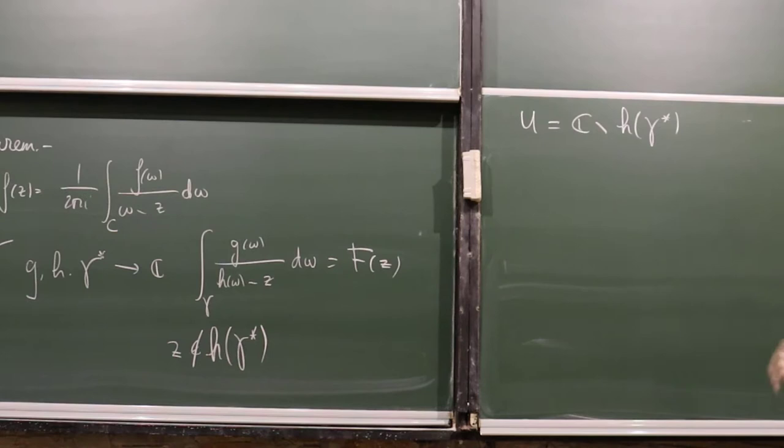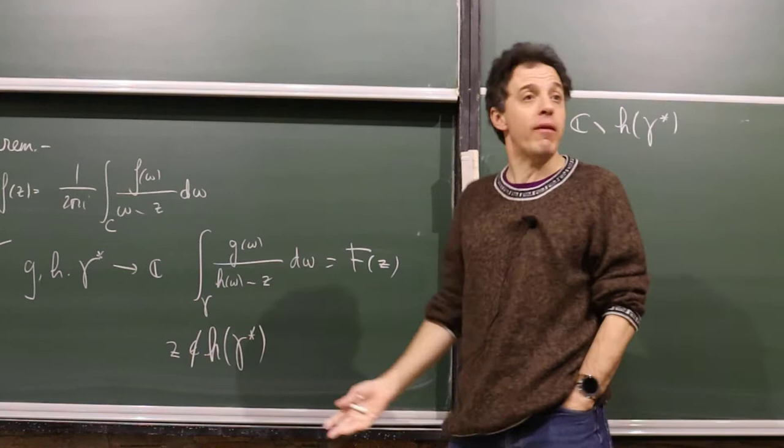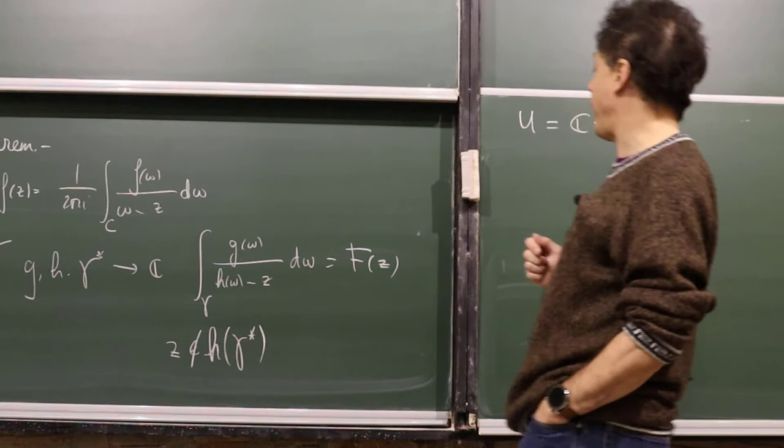Since Γ* is the image of a closed interval under a continuous map, and H is continuous, this image is compact, and in particular closed. So U is an open set, and you have a map defined on this open set.